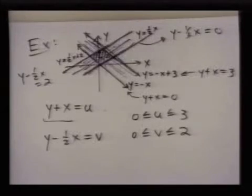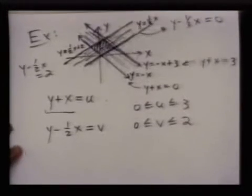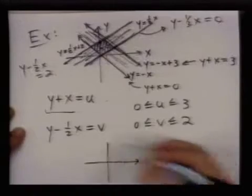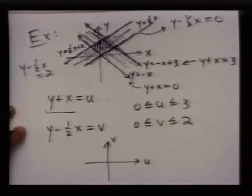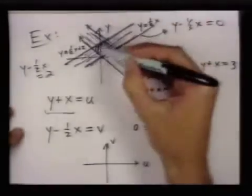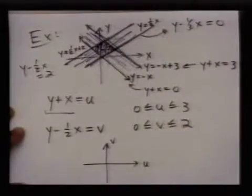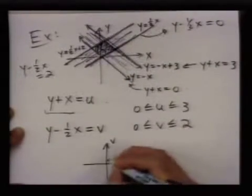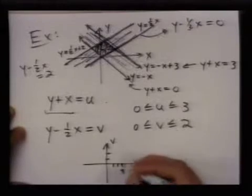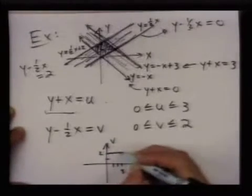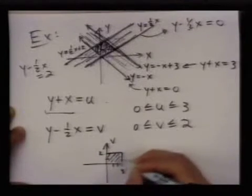So, with these new variables, I can describe this shape as just the box where u goes from 0 to 3 and v goes from 0 to 2.